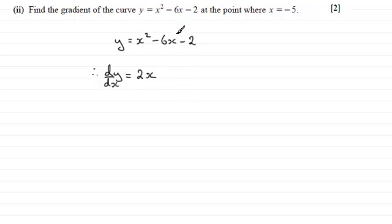For minus 6x we've got a 1 here on the power so we do 1 times minus 6 which is minus 6, reduce the power by 1 and you get x to the power 0. x to the power 0 is 1 so you're just left with minus 6. And remember that when you've got a constant term, differentiating that gives us 0.